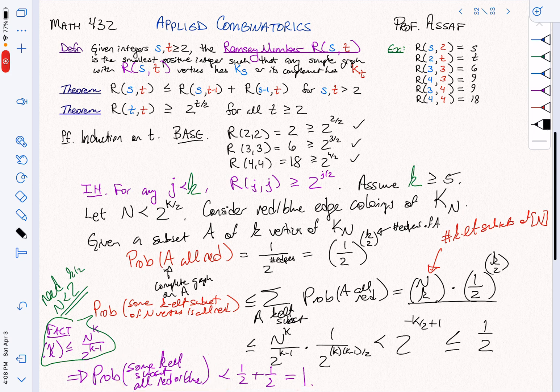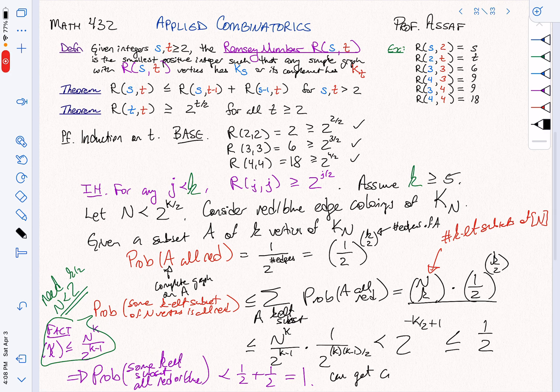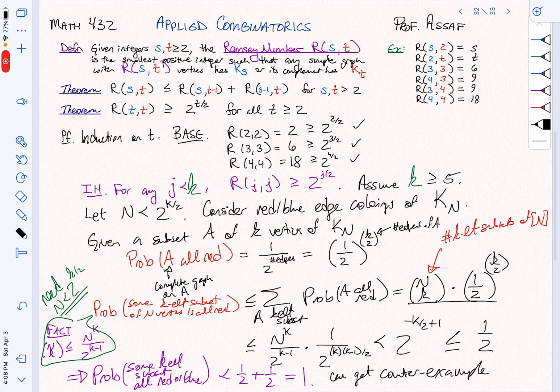So that tells us that we can do it. We can get a counterexample. It doesn't tell us how to find it. It doesn't tell us where it is. It's a completely non-constructive proof, but it's rather elegant in the fact that it's saying, well, it's possible to do something. Therefore, the Ramsey number has to be bigger than that.